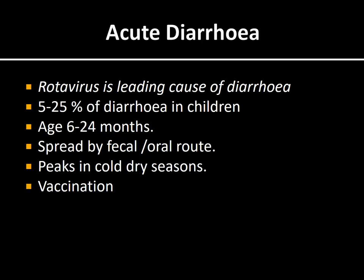Rotavirus is the leading cause of diarrhea in young children, causing 5 to 25 percent of diarrheal disease — mostly in children aged 6 to 24 months. It spreads through the fecal-oral route. Luckily, vaccination is available and is now part of the EPI — Expanded Program for Immunization — sponsored by the government. There are two doses, and the second dose must be given before 13 weeks of birth.